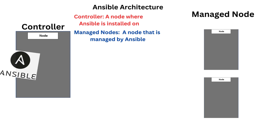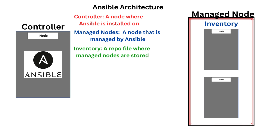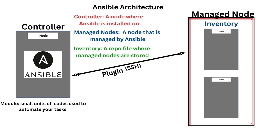The controller is the node the Ansible software will be installed on, while the managed nodes are the nodes that will be managed by the controller. The managed nodes need to be stored in a repository called inventory. The controller communicates with the managed hosts via a plugin, and the default Ansible connection plugin is SSH. This makes Ansible simple yet powerful because we don't need an agent for communication between the controller and the managed nodes.